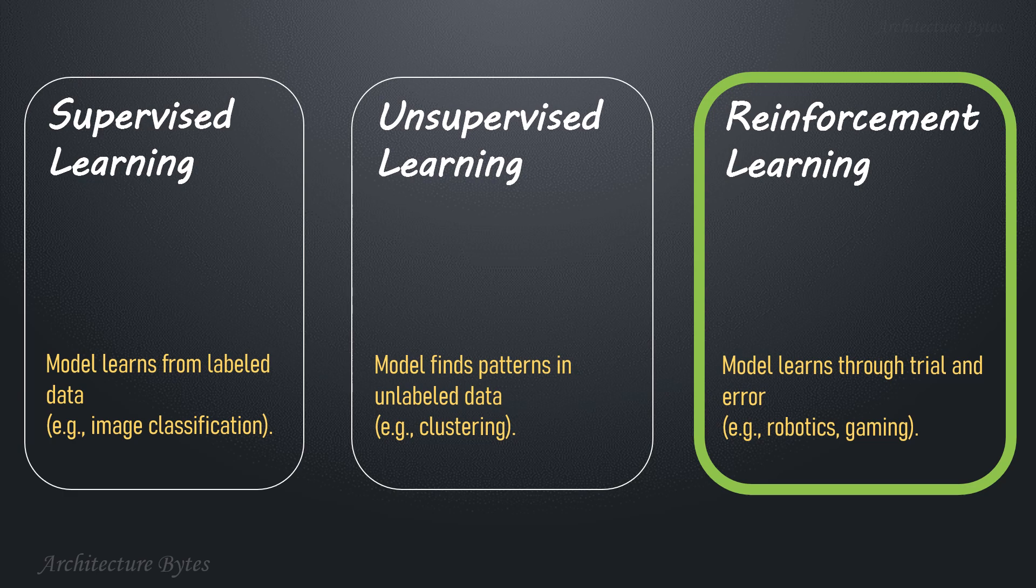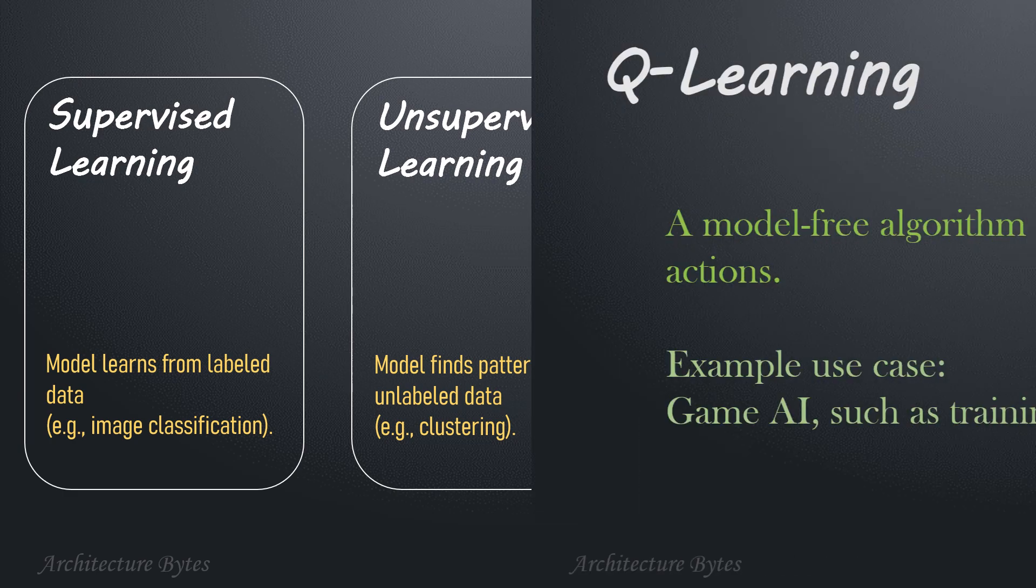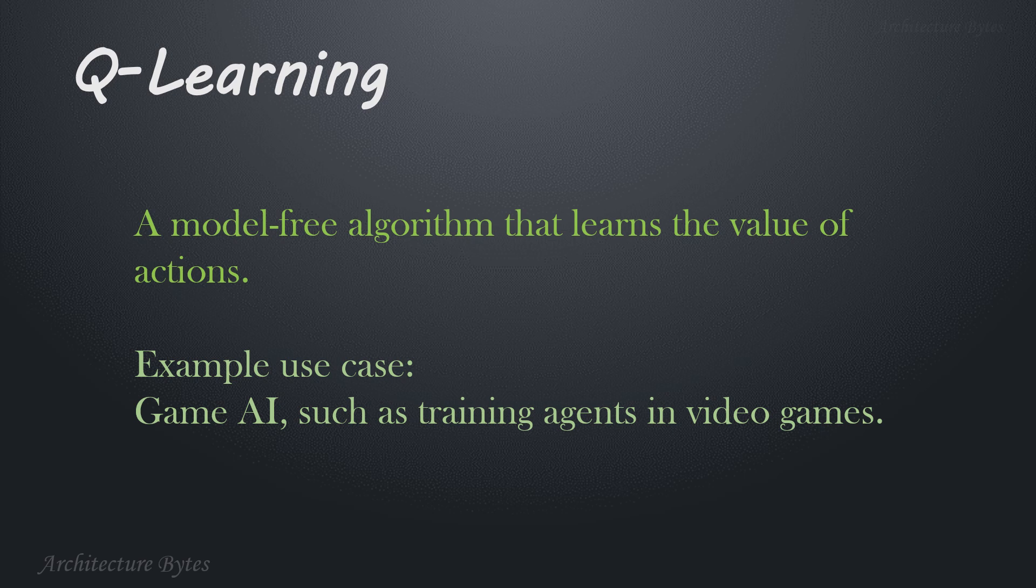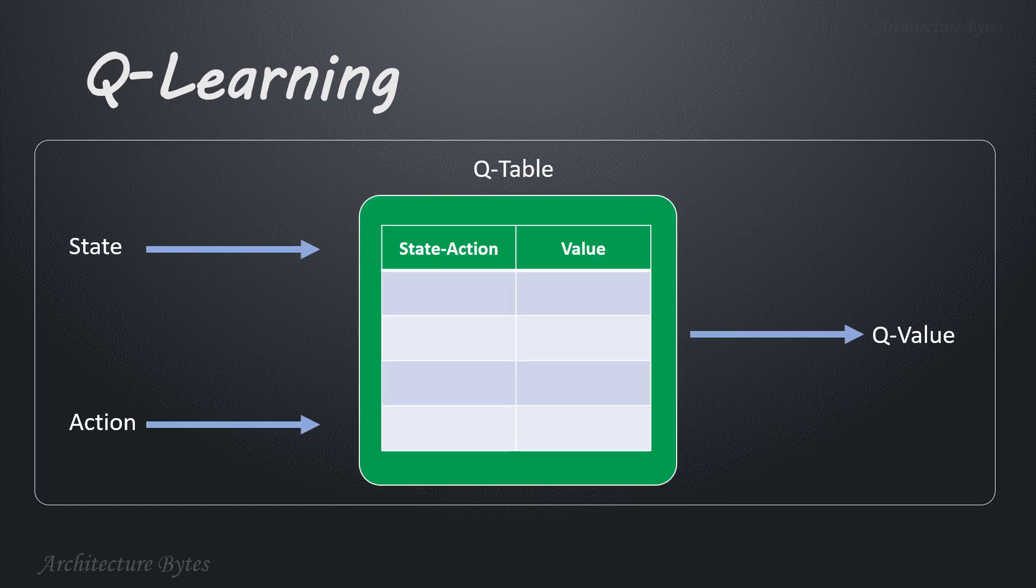Let's learn about reinforcement learning algorithms. Q-learning: a model-free algorithm that learns the value of actions. Example use case: game AI such as training agents in video games. Q-learning is a model-free algorithm where the agent learns a value, that is Q value, for each action in each state. It updates the Q values based on rewards received and aims to learn an optimal action value function. Use cases: grid world tasks, robotics, simple games.